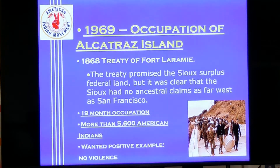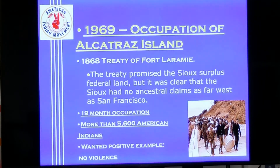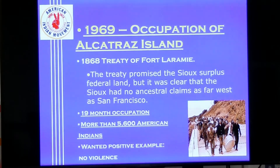One of the first big things AIM does is occupy Alcatraz Island. Alcatraz was our highest-security prison, off the coast of San Francisco — an island prison, hard to escape from. They occupied it because by 1969, Alcatraz was no longer being used as a prison. In 1868, there was the Treaty of Fort Laramie signed in Wyoming, which promised the Sioux Indians surplus federal land as part of them giving up some of their land.